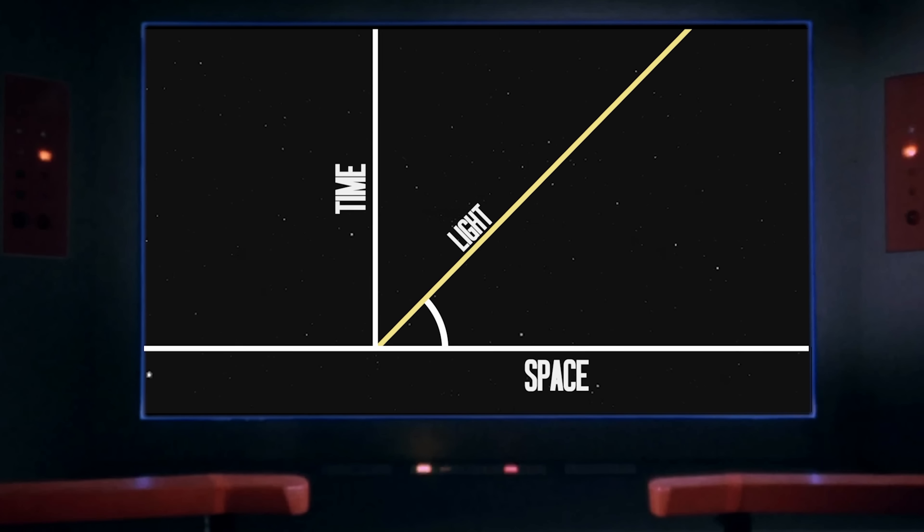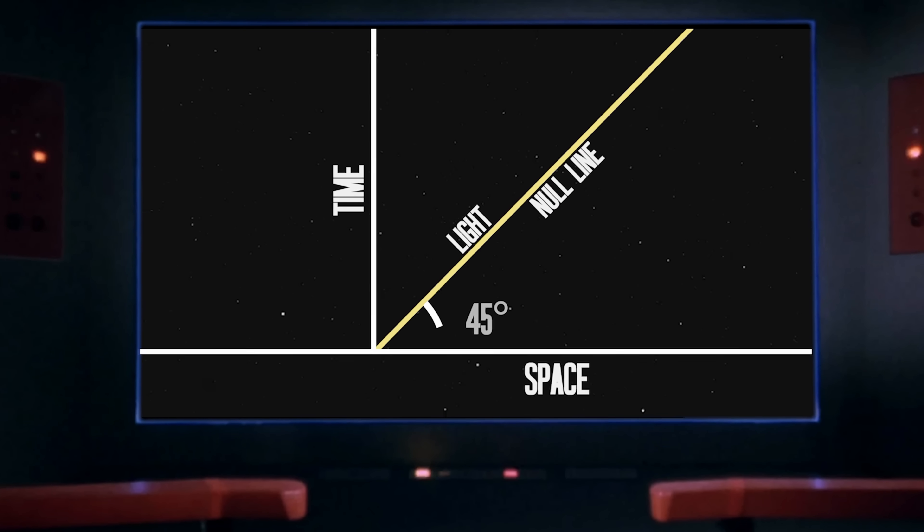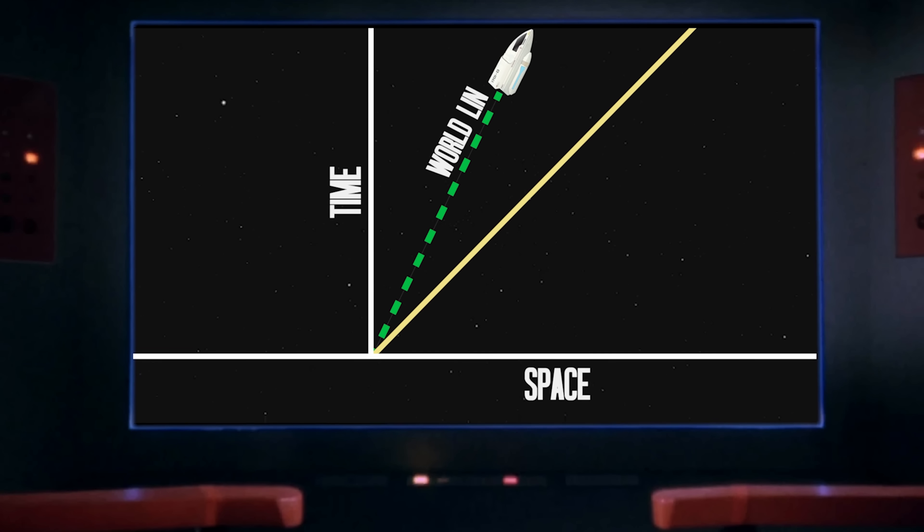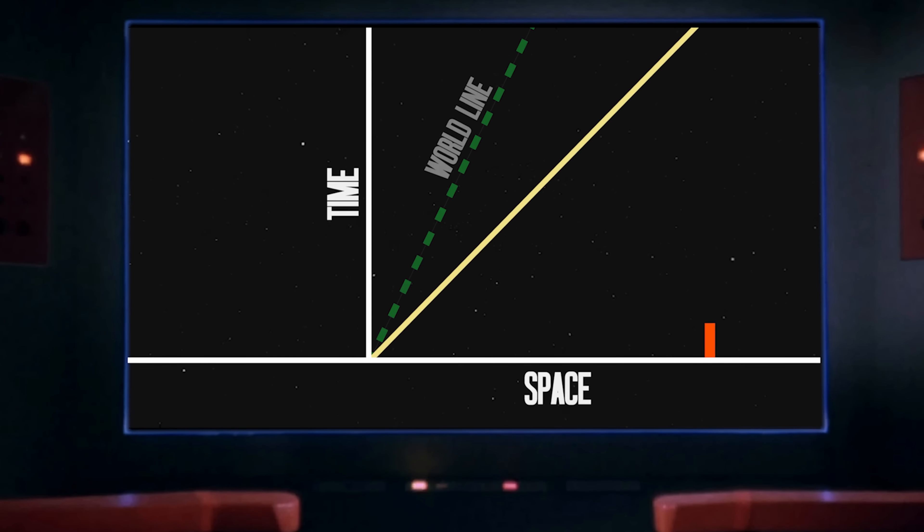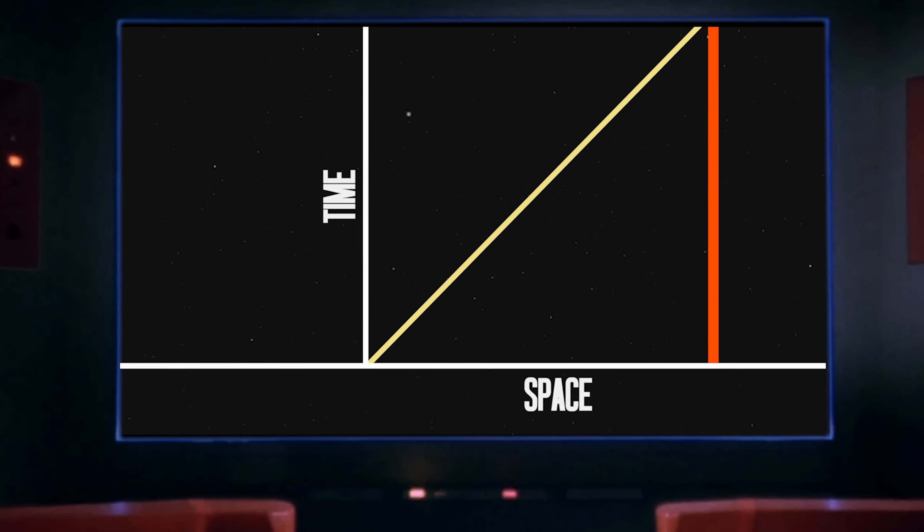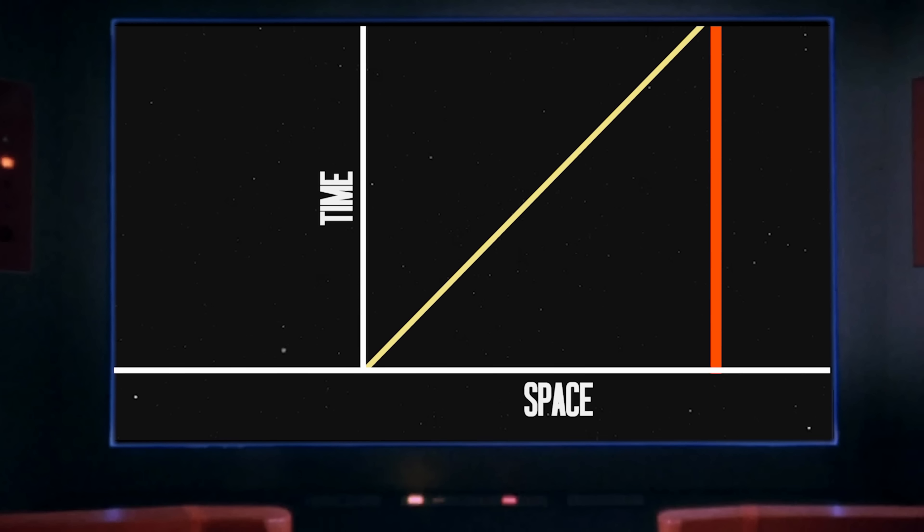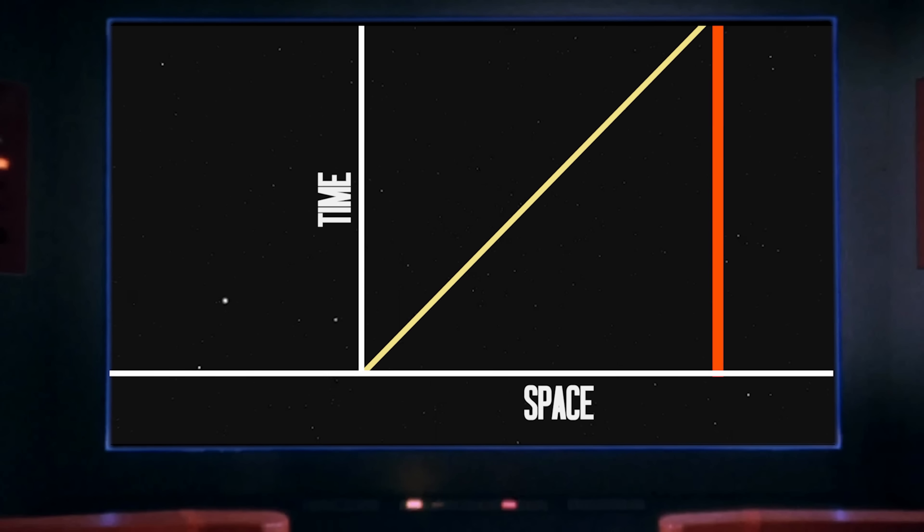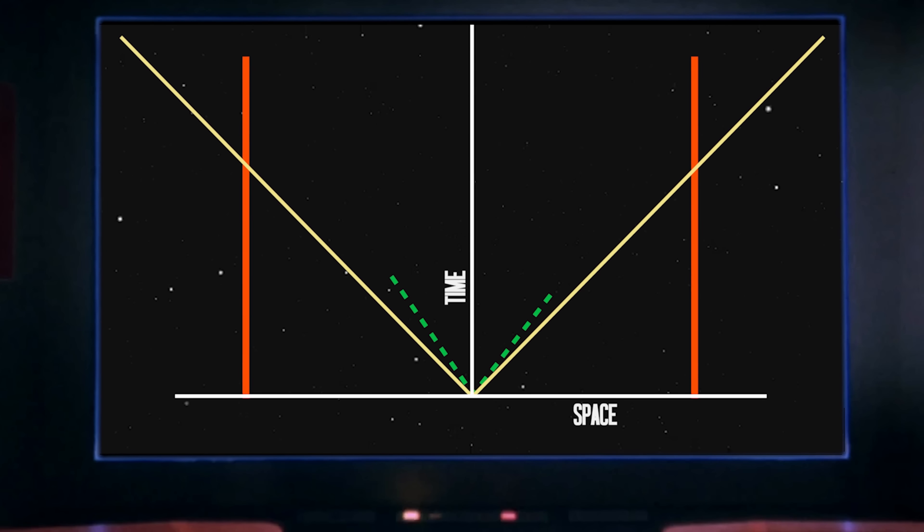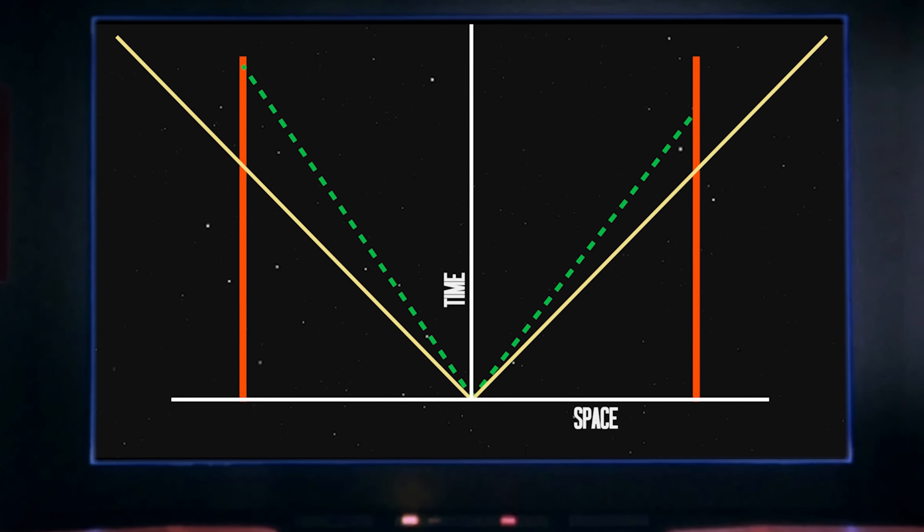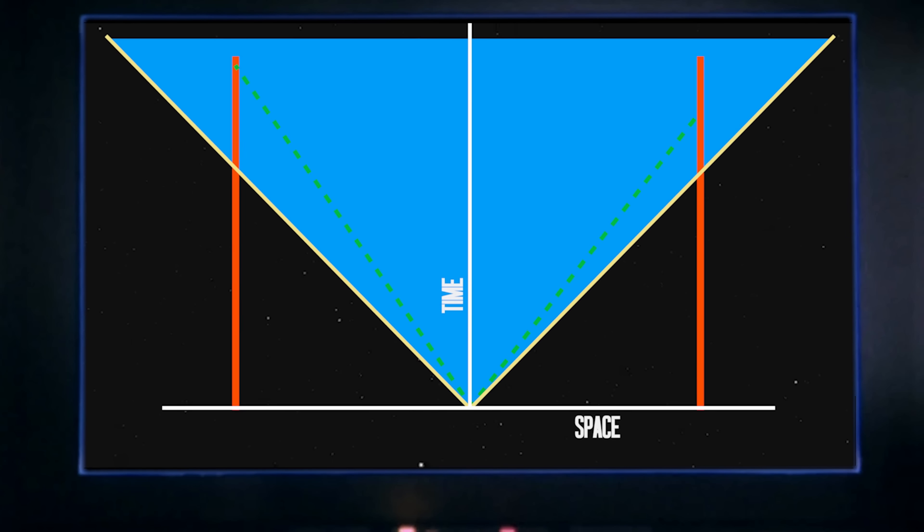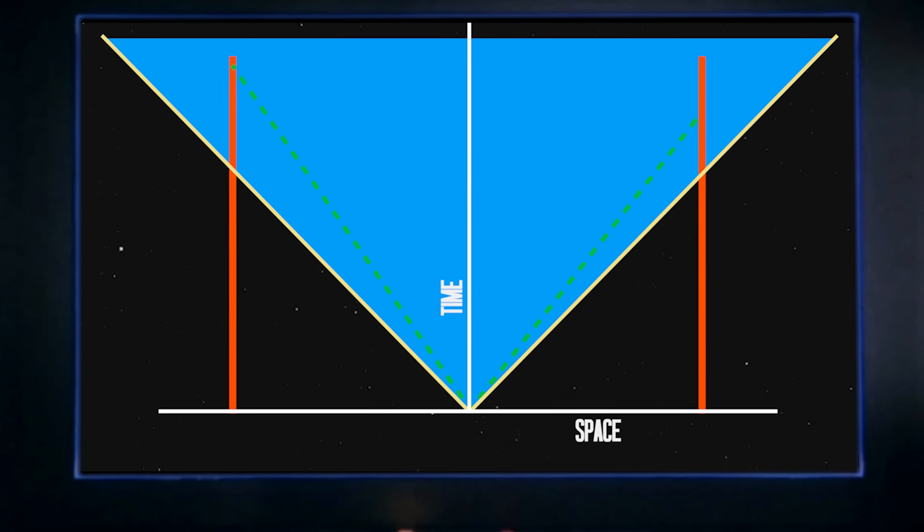All light rays travel at a 45 degree angle, called a null line, and an object's path through spacetime is called its world line. An object in a stationary reference frame would, for example, travel straight upwards from the graph's origin as observed locally under Einstein's theory of relativity. Any object moving forwards or backwards through spacetime slower than the speed of light would have its motion illustrated by a world line above the null line, since it would take longer for that object to reach distant parts of the universe.